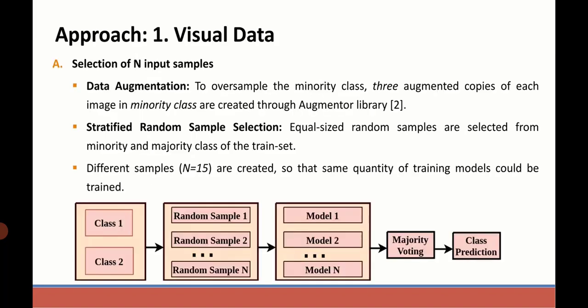For the task of visual data processing, we applied data augmentation on the minority class and made them equal to the majority class in quantity. After that, we applied stratified random sample selection and selected equal numbers of instances from minority and majority classes. In similar manner, we created 15 random samples.